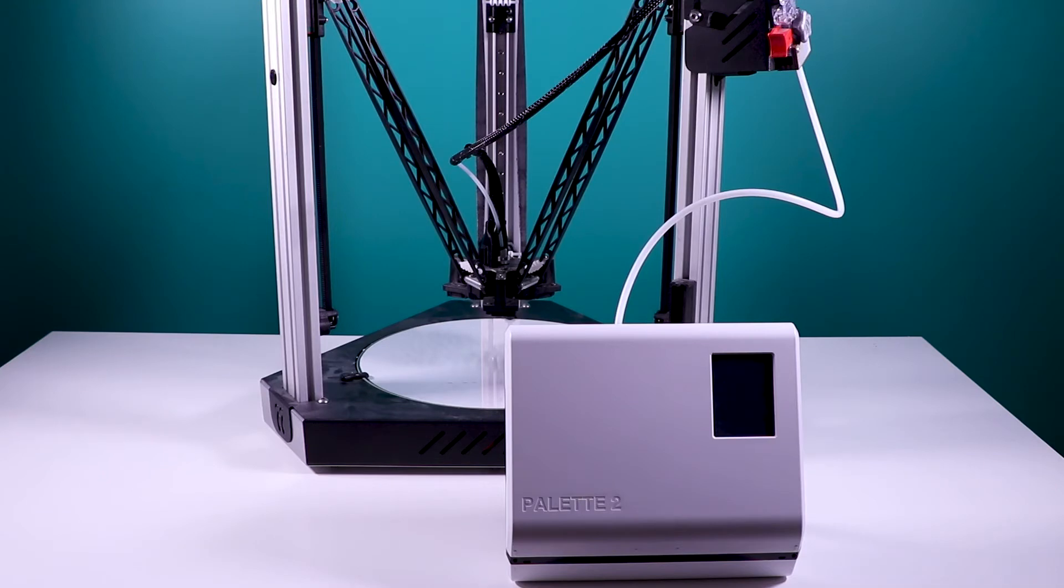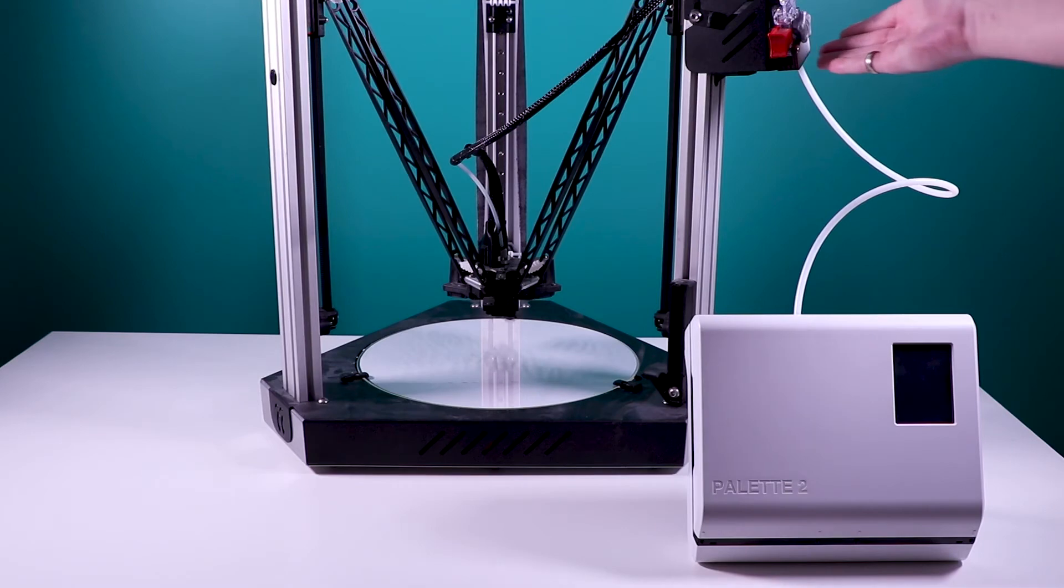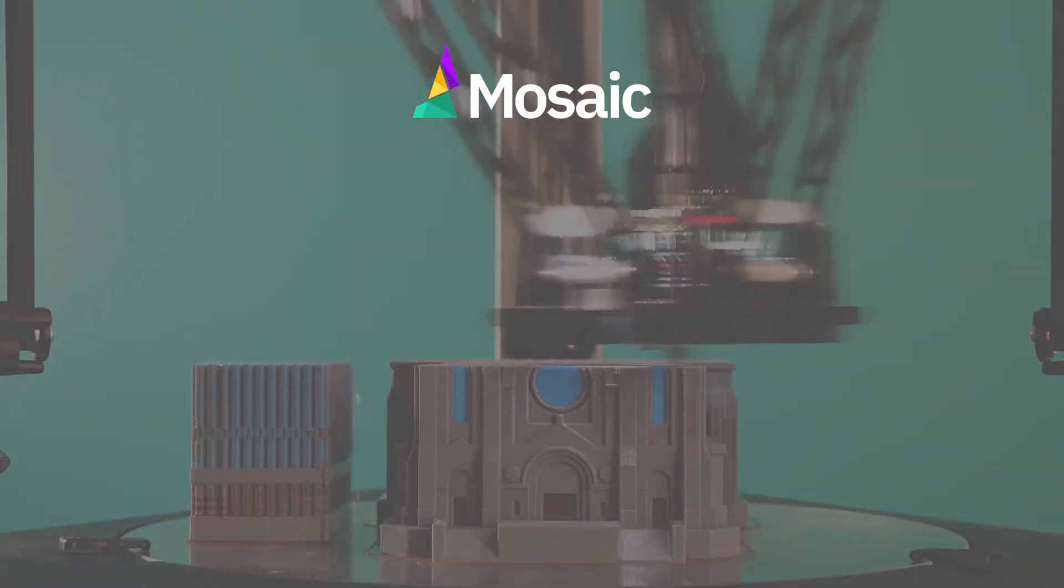Palette 2 can be placed horizontally, mounted, or on a stand. We use a stand in this setup and we recommend placing the Palette beneath the extruder to reduce the angle of the tube and allow the filament to move smoothly into the extruder.